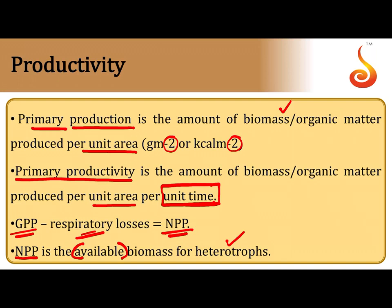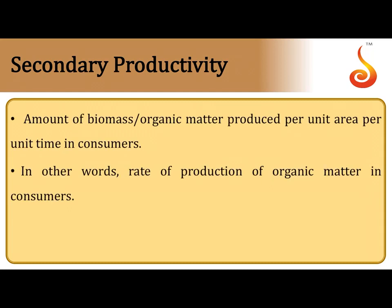Primary productivity involves photosynthesis. Gross primary productivity minus respiratory losses gives net primary productivity, which is available to the next trophic level. A consumer feeds on the producer and uses much energy for digestion, excretion, and life processes. The amount of biomass stored by the consumer in the form of flesh per unit area per unit time is referred to as secondary productivity.